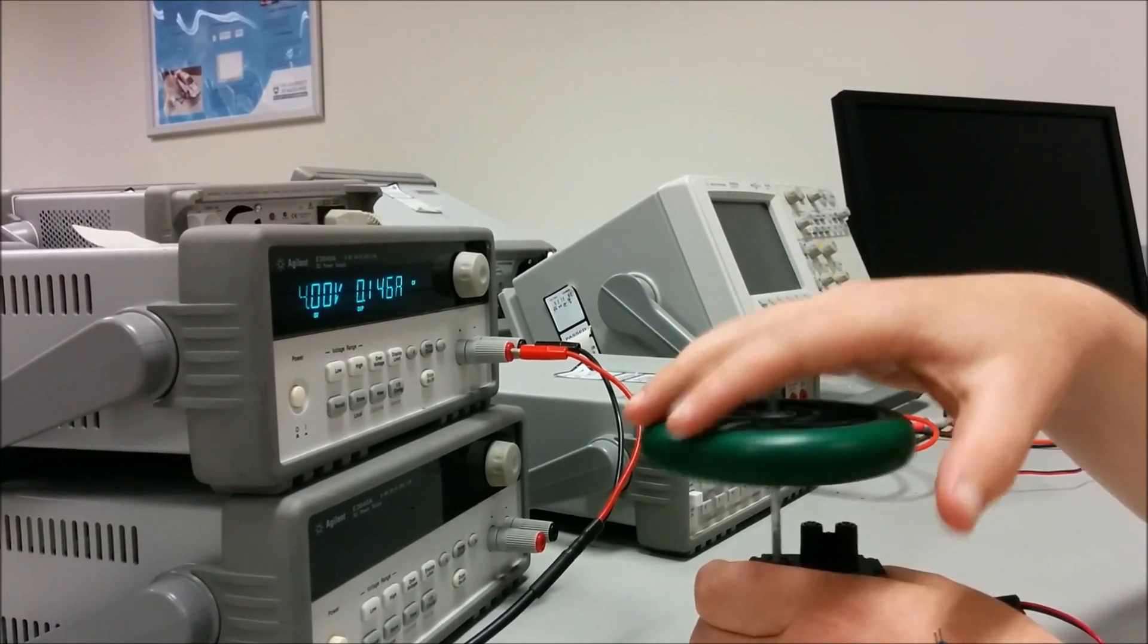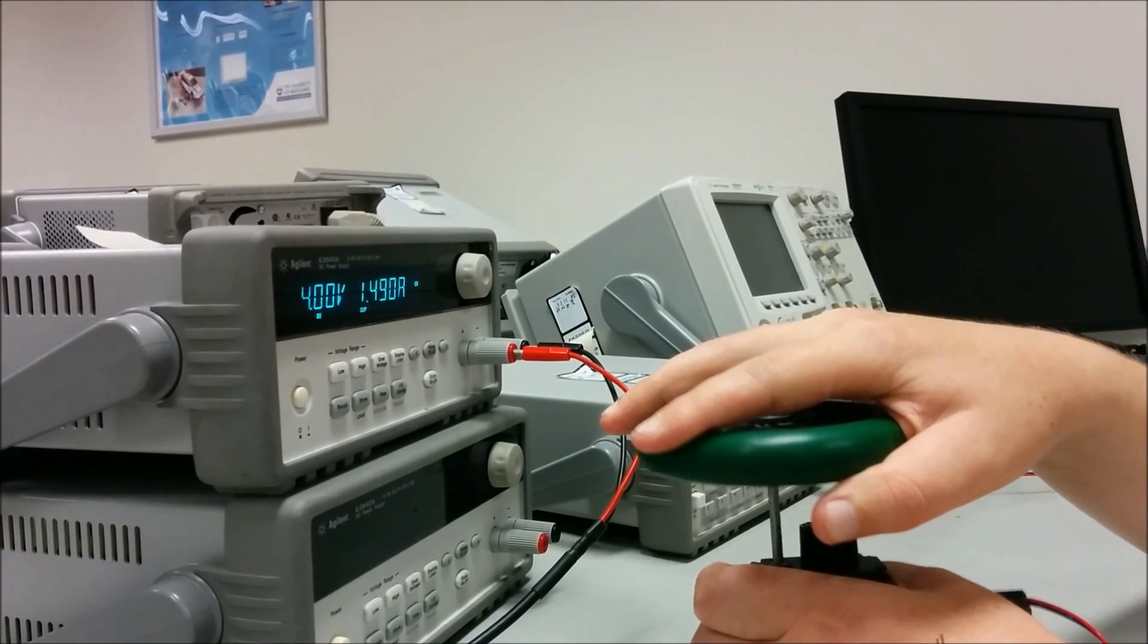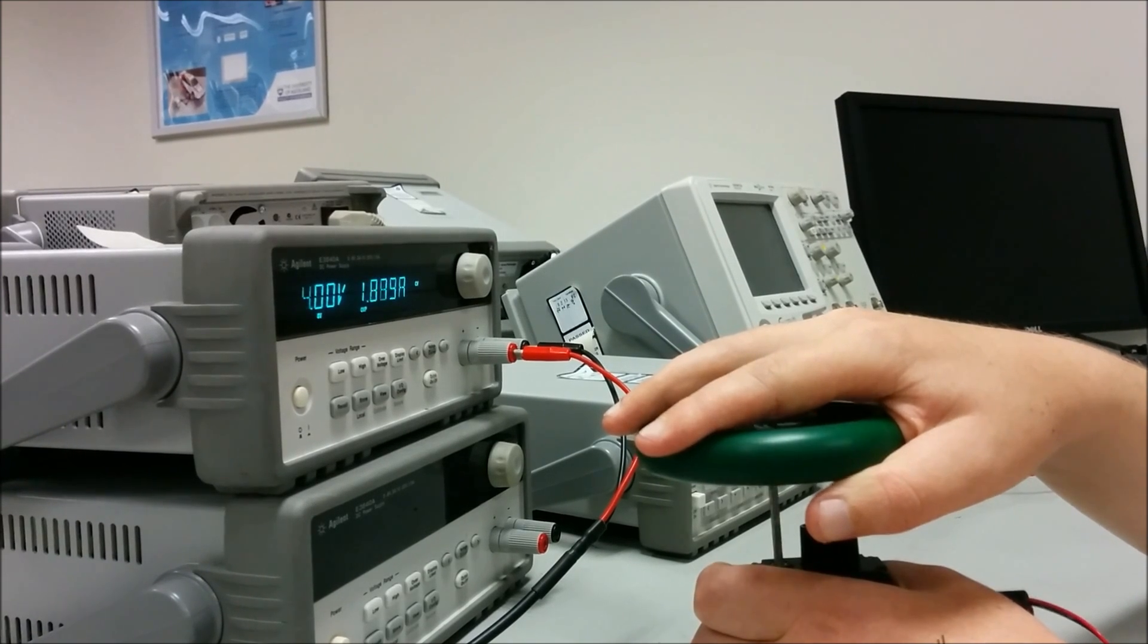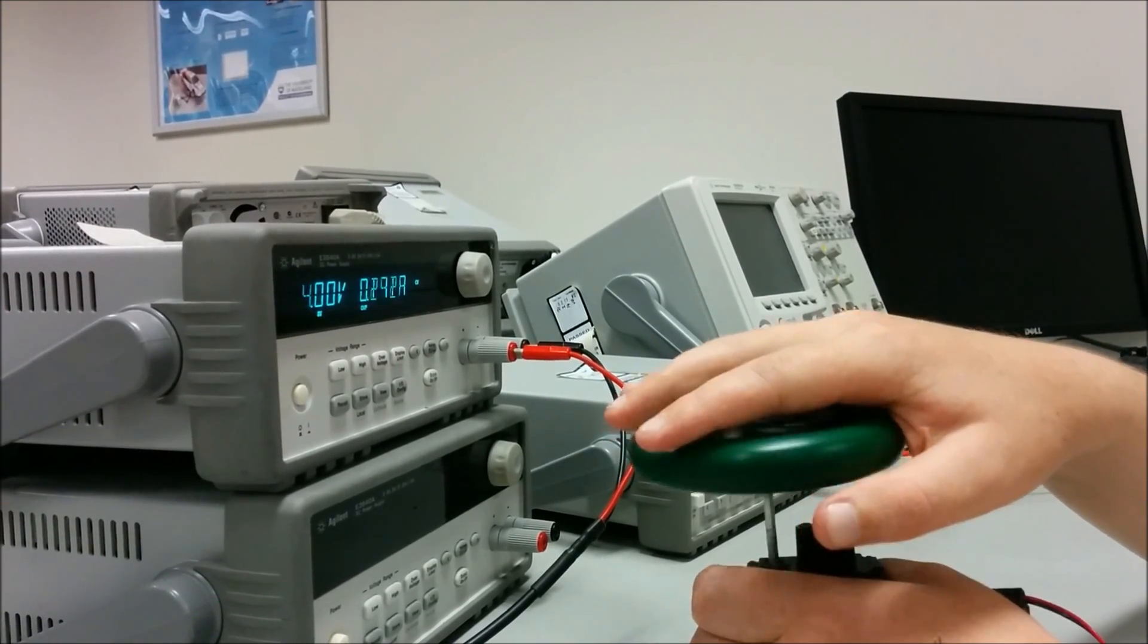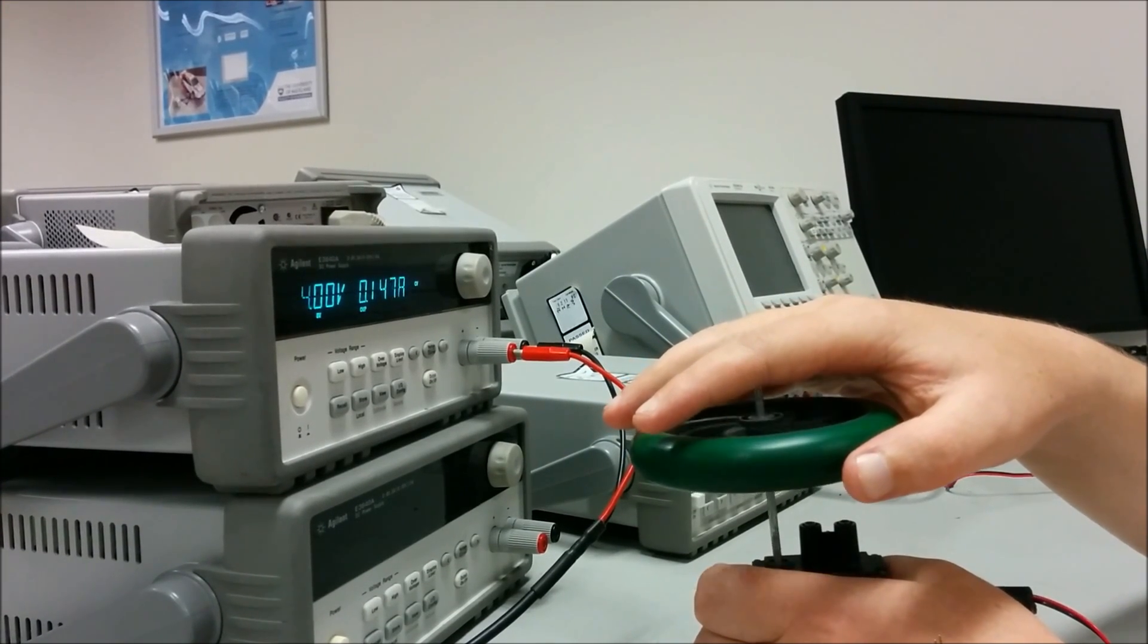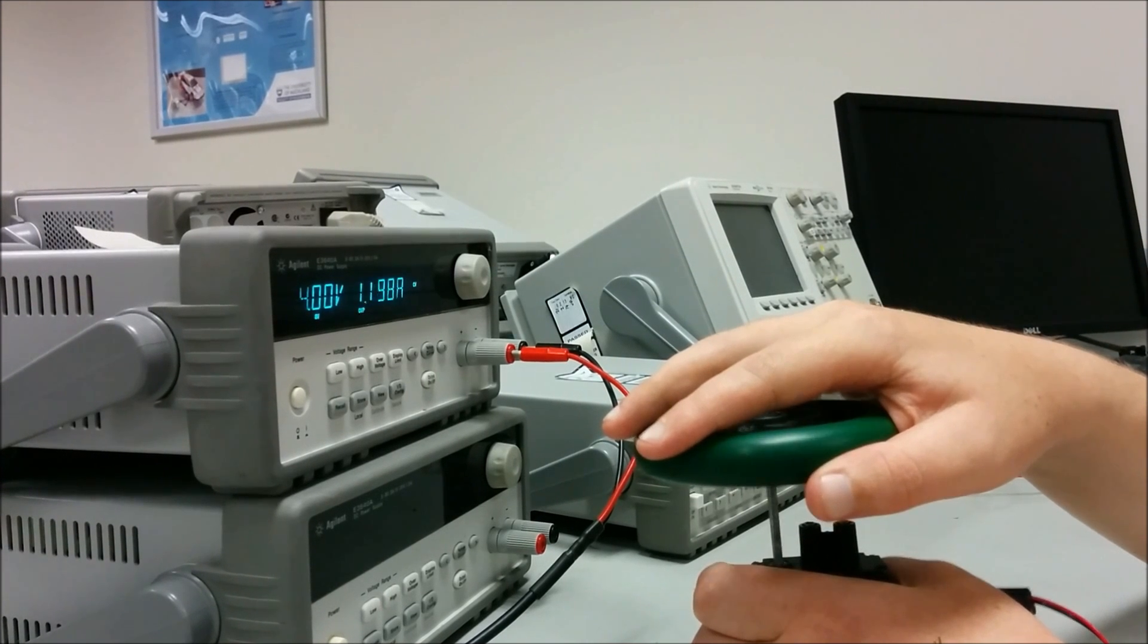When we apply more torque the speed decreases. This means the motor generates less back voltage allowing the coil to carry more current and generating more torque. When we completely stop the motor the current reaches its maximum for this voltage of about 0.5 amps.